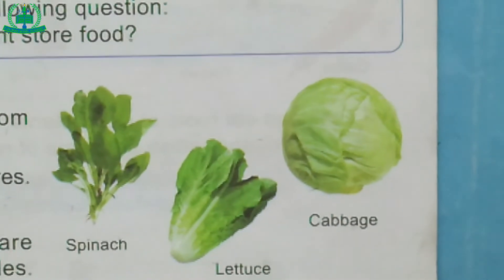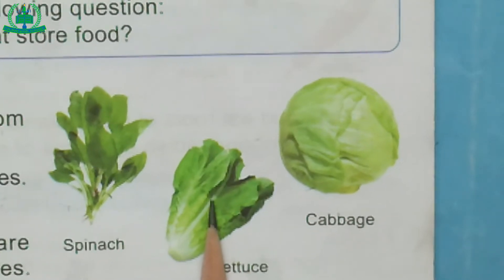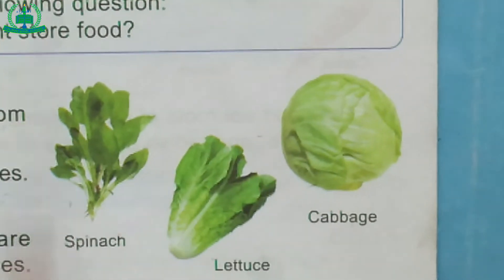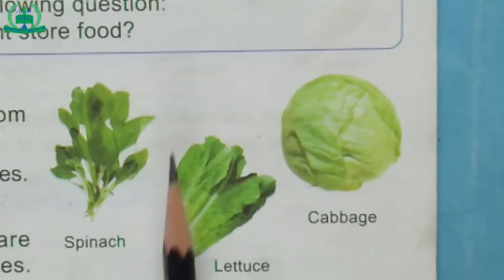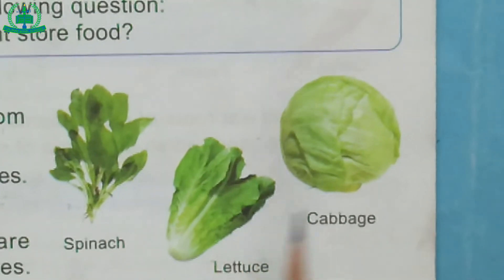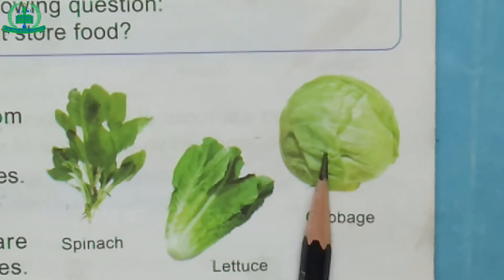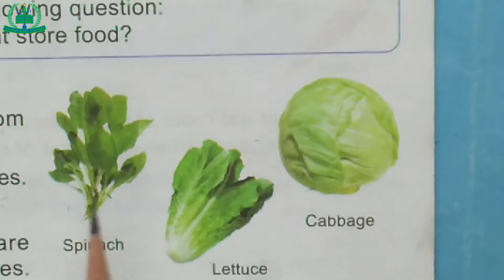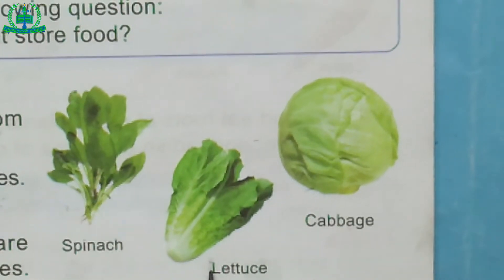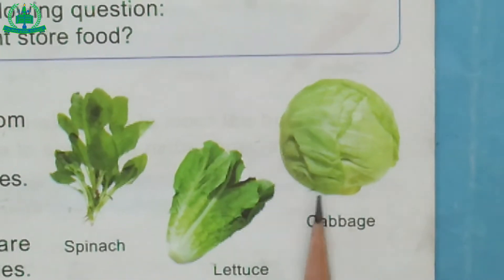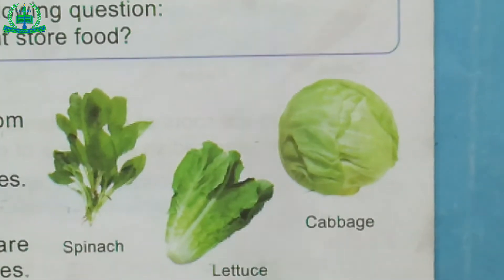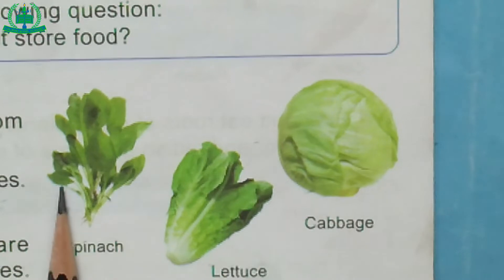Vegetables that we eat come from different parts of plants. Some plants store their food in their leaves, and we eat leaves of many plants. Spinach, lettuce and cabbage are some examples of leafy vegetables.